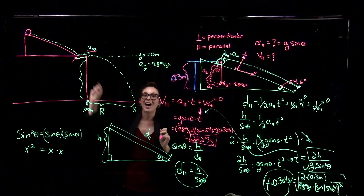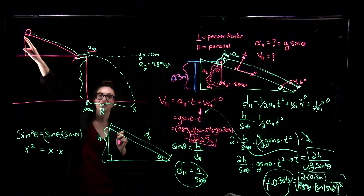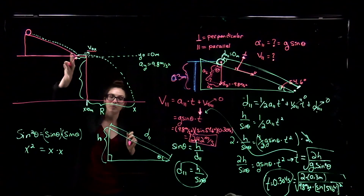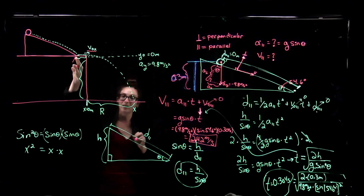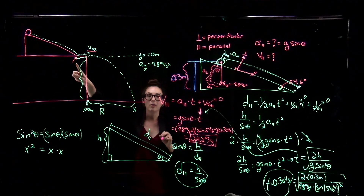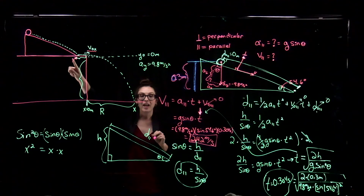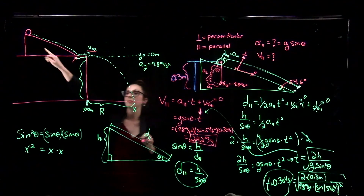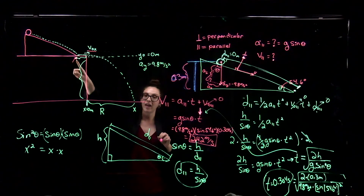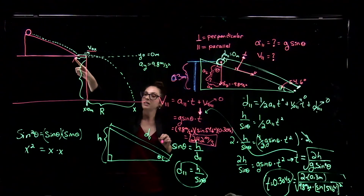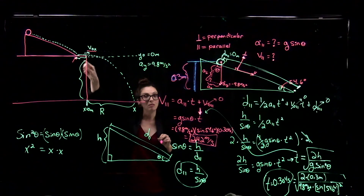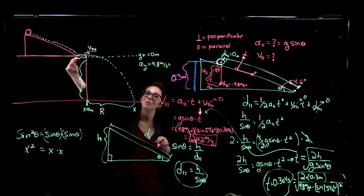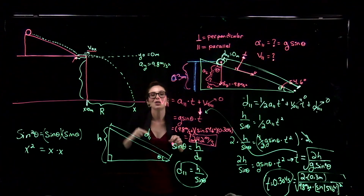So our ball starts from rest up on the incline, rolls down the plane gaining speed due to its acceleration, and when it reaches the bottom its velocity is 2.42 meters per second. That velocity remains constant as the ball moves across the flat table, and it becomes the horizontal launch velocity as the ball leaves the edge of the table and falls to the ground.